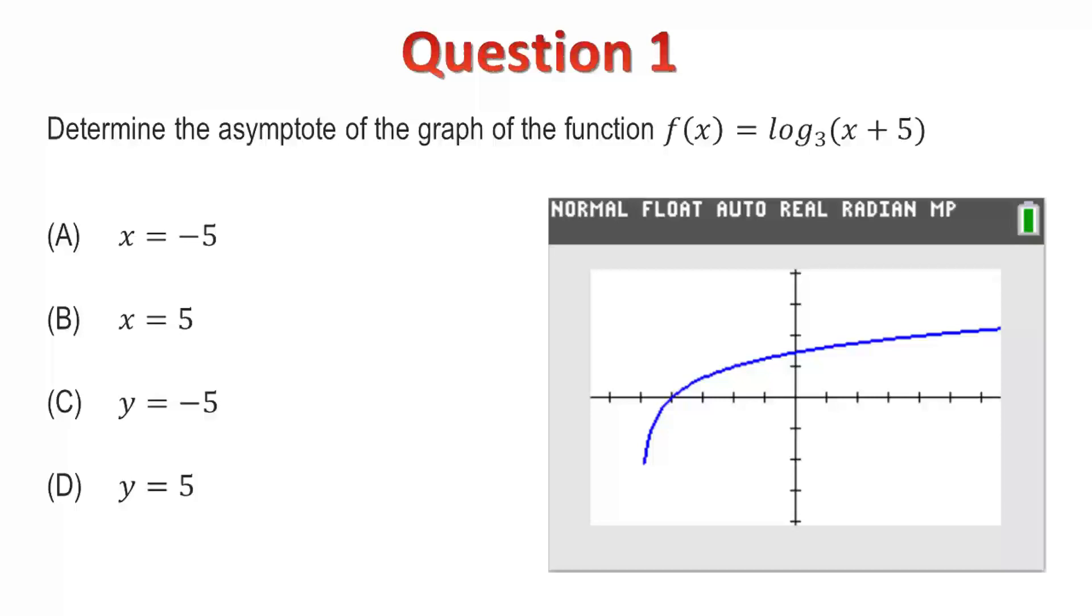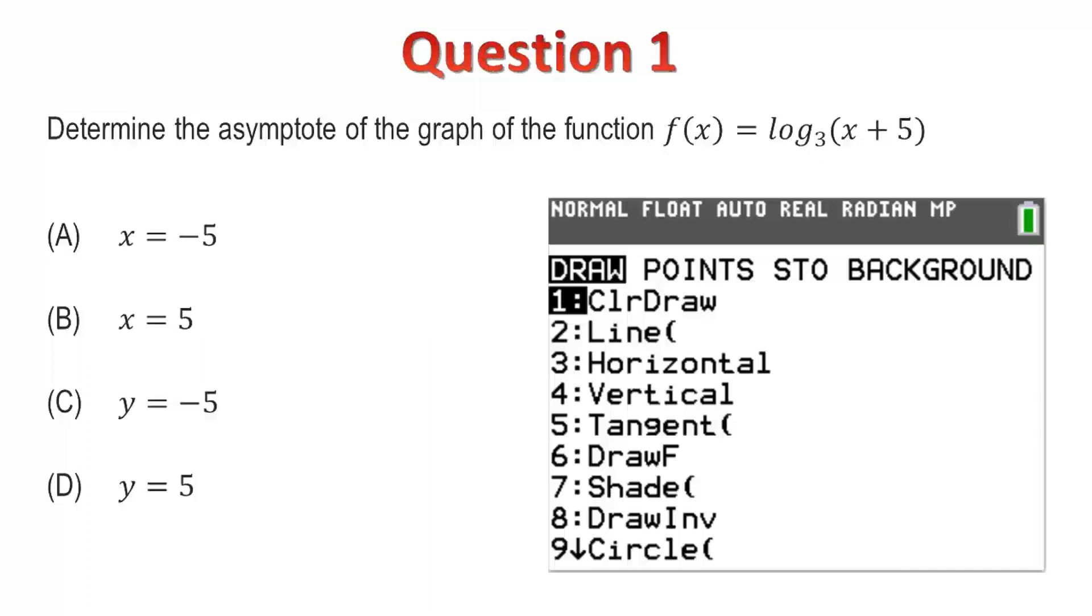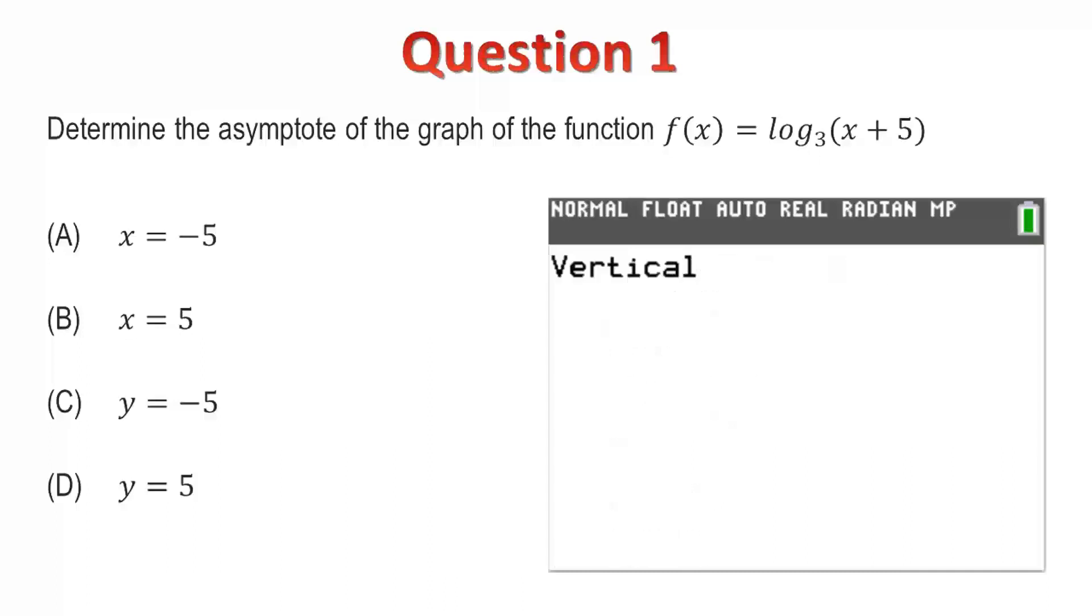We can see that the function appears to be approaching a vertical line. The screen resolution prevents us from seeing more detail. However, we can draw a vertical line at x equals negative 5 to get further visual confirmation that the equation to the asymptote is indeed at x equals negative 5. Based on this information, I'll select option A.